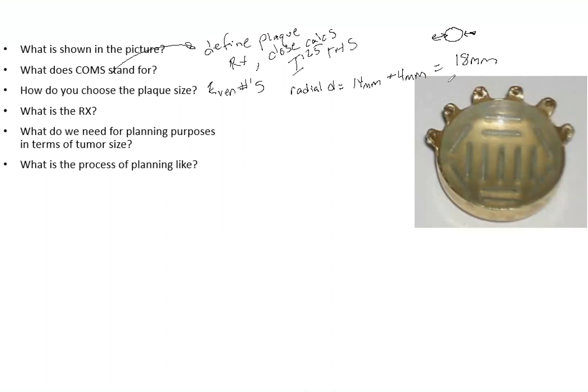Now the prescription: 85 Gray to the apex of the tumor. Remember, this is LDR - all these are seeds that are delivered in one week, then the plaque is taken out and the seeds obviously no longer deliver dose to the patient. Apex in one week - very important you remember the prescription.